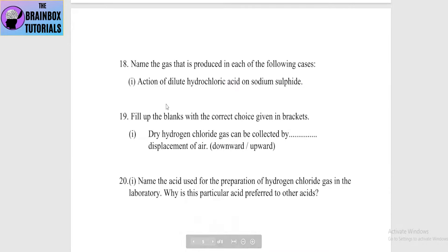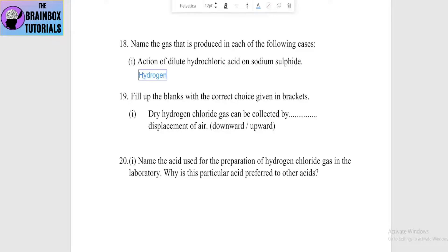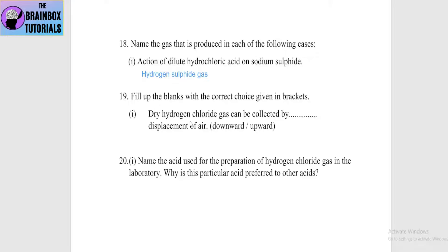Next: name the gas produced — action of dilute hydrochloric acid on sodium sulfite. When sodium sulfite reacts with hydrochloric acid, the gas produced is sulfur dioxide (SO2).